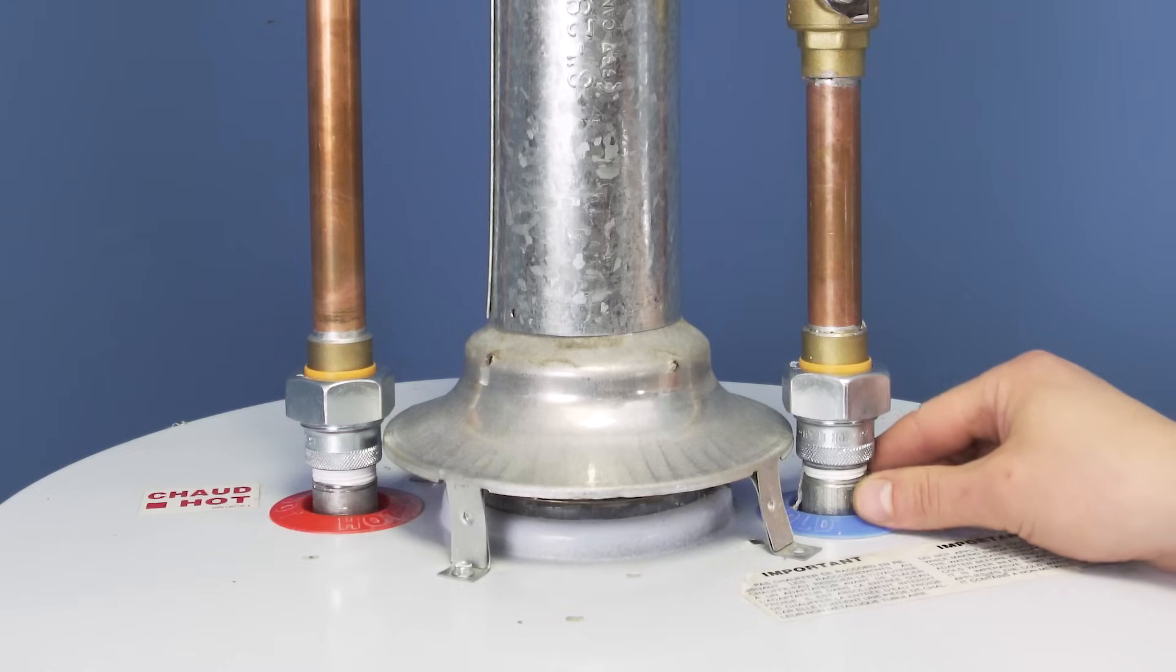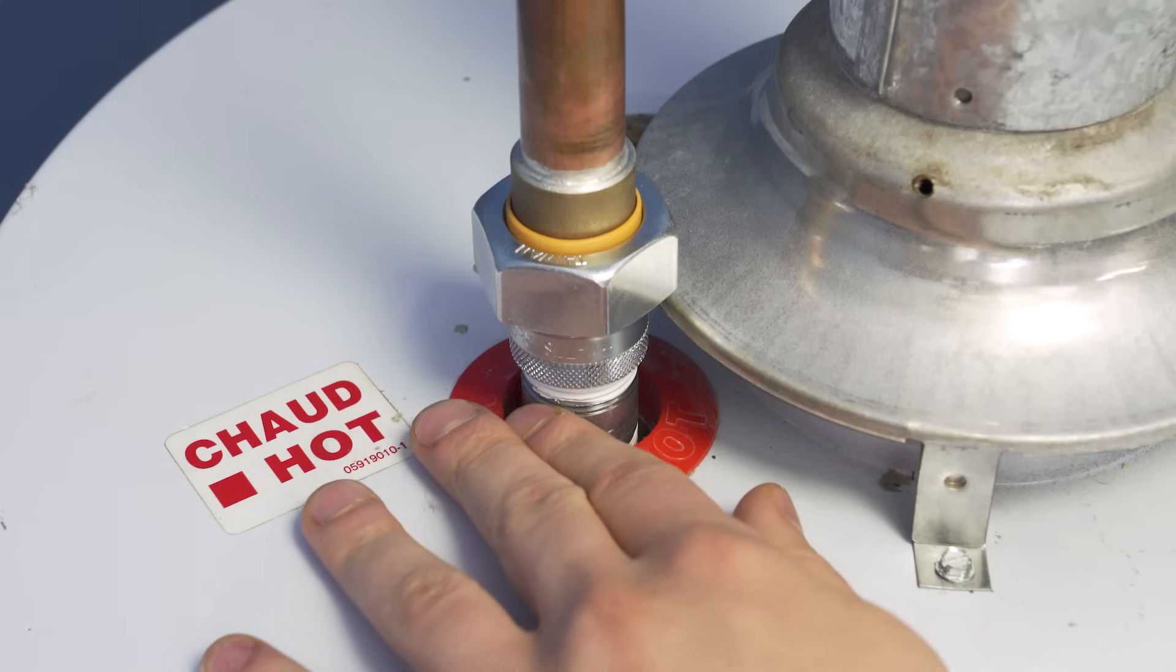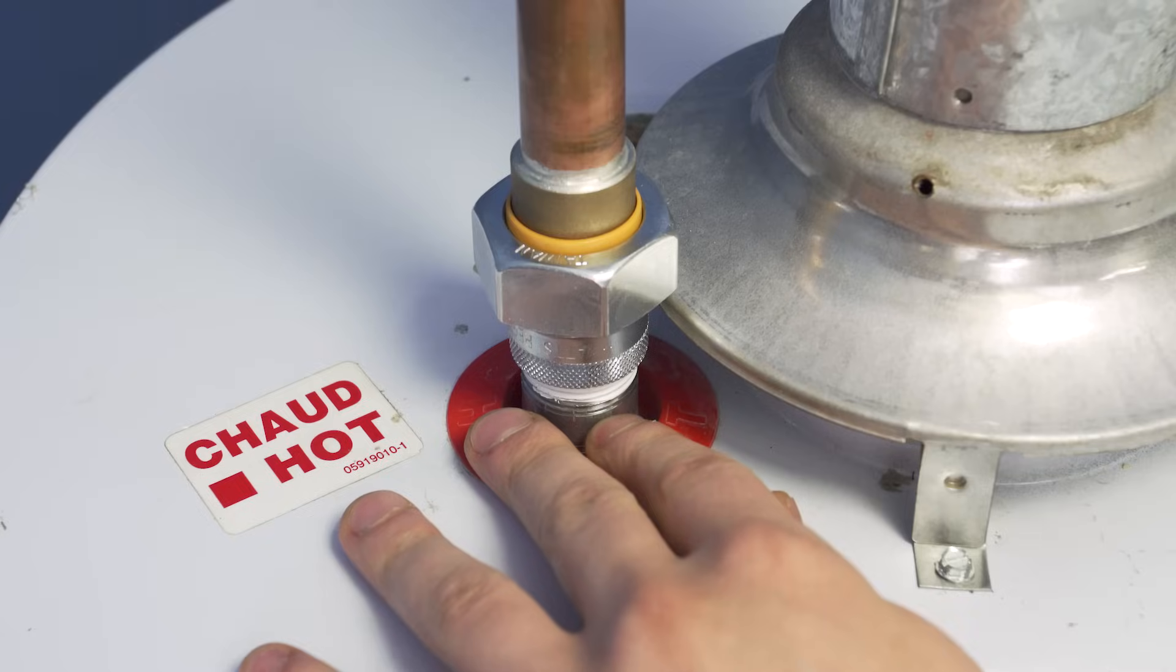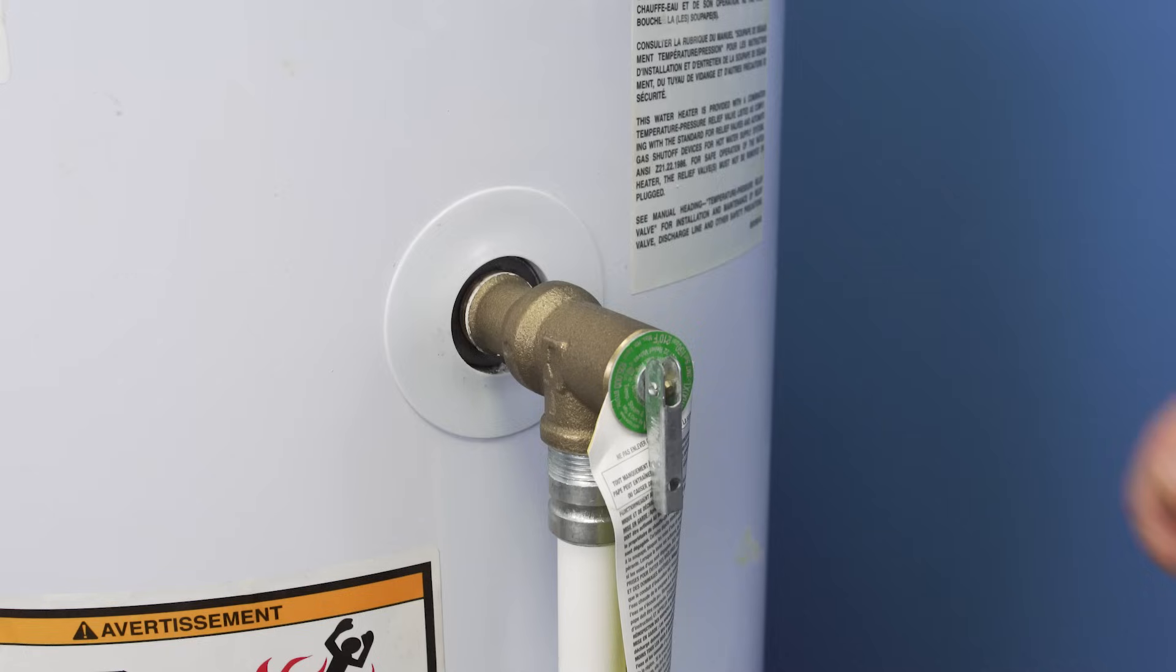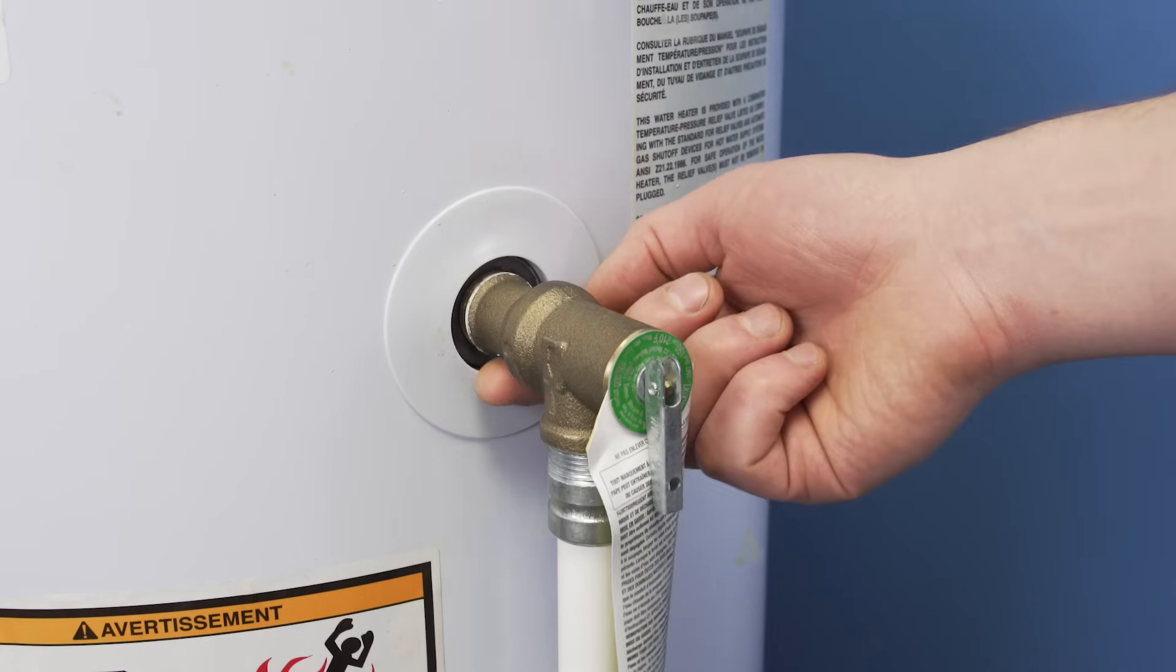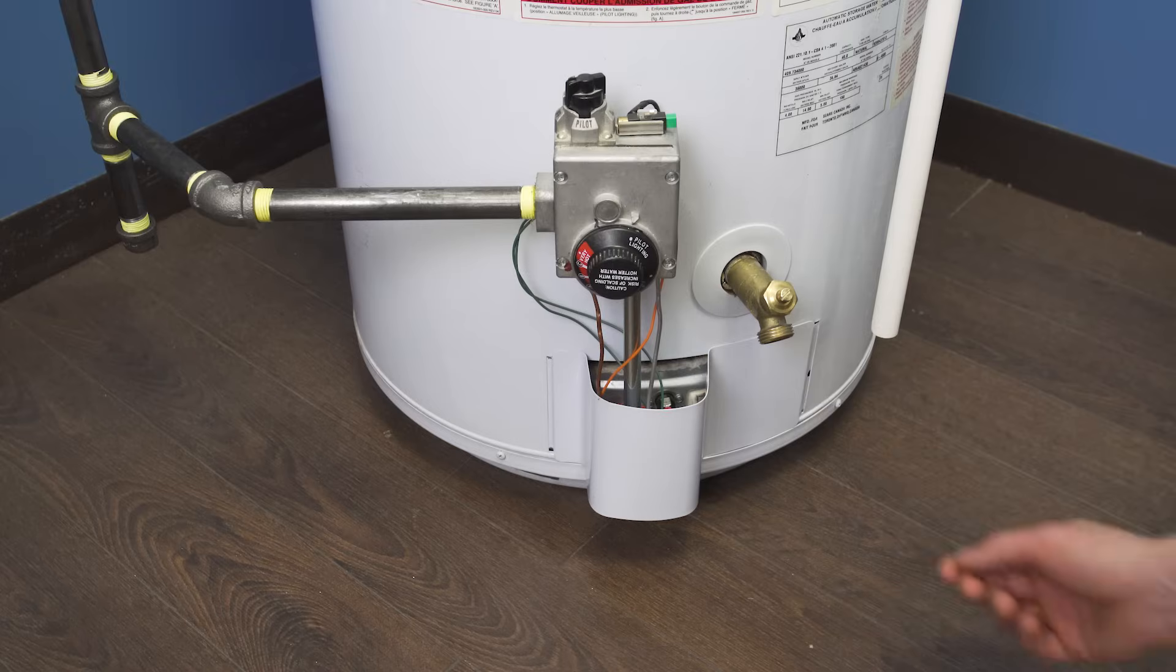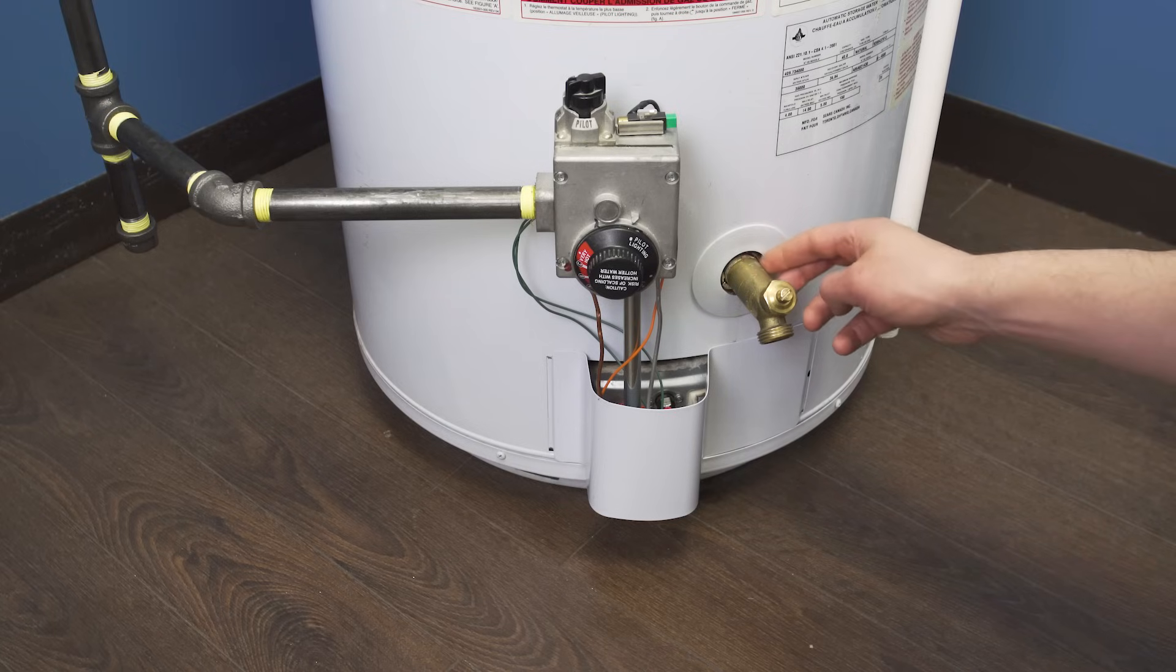To start it's best to do a walk around to check for any leaks. Check the inlet and outlet pipes leading into the tank. Next check the pressure and temperature relief valve, looking for any water weeping around the threads, or around the valve body. Now look at the drain valve. If you see any water leaking, it's best to replace that part.